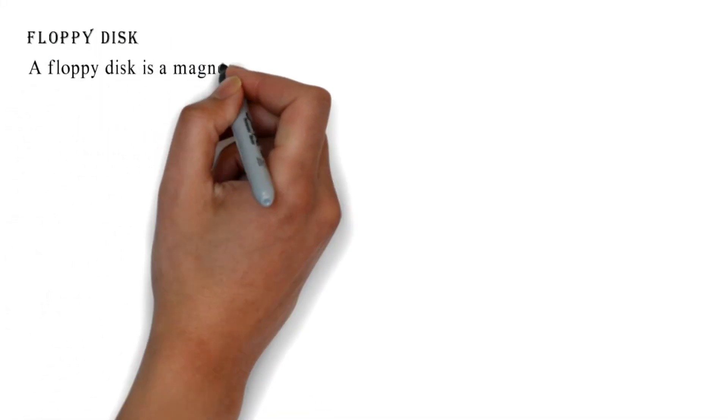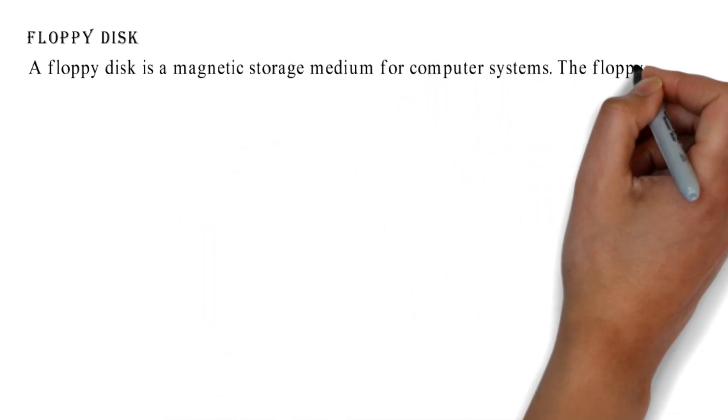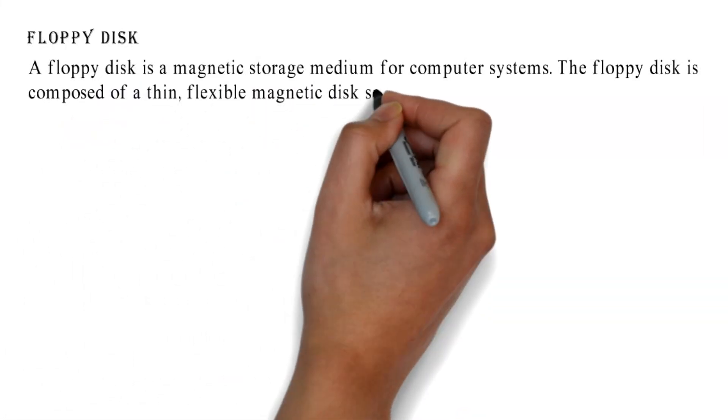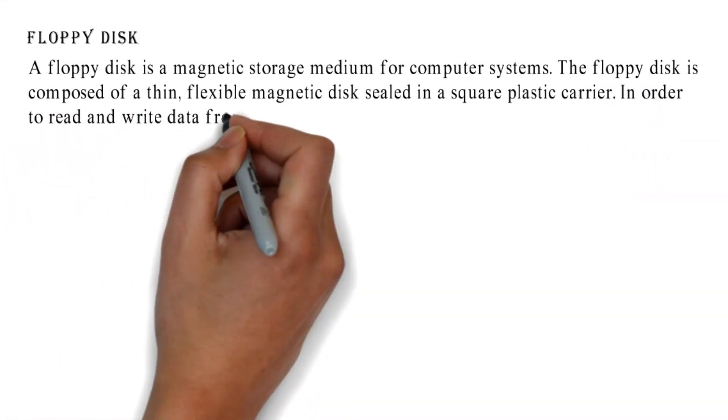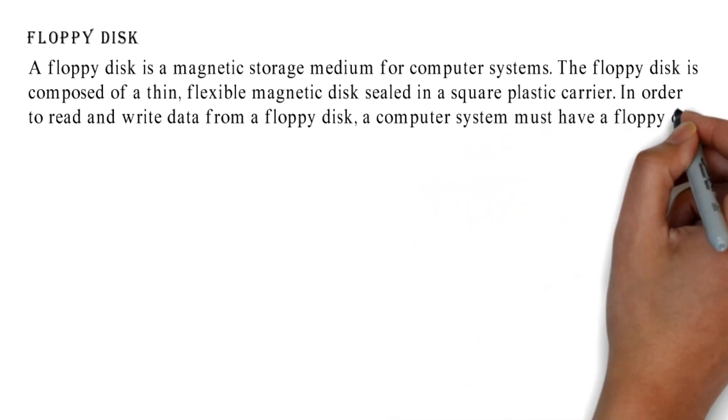Floppy disk: A floppy disk is a magnetic storage medium for computer systems. The floppy disk is composed of a thin, flexible magnetic disk sealed in a square plastic carrier. In order to read and write data from a floppy disk, a computer system must have a floppy disk drive.